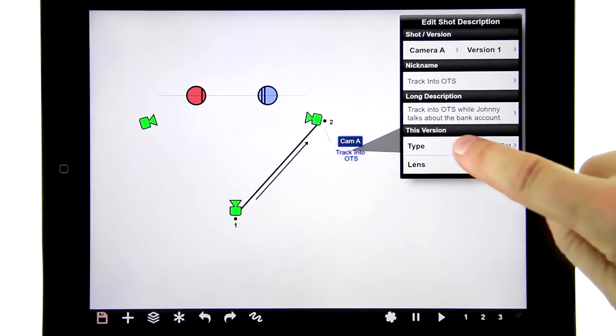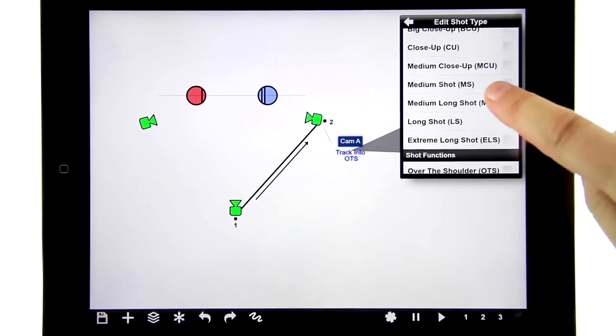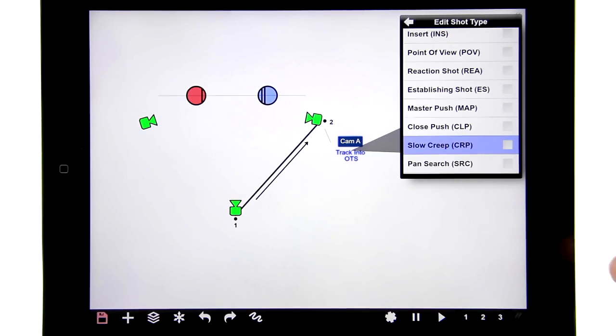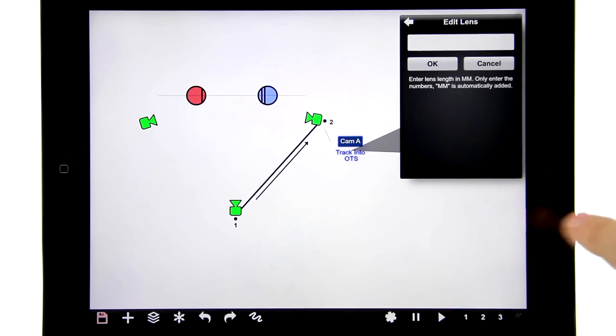I can also select a shot type and choose from a list of either shot sizes or shot functions that are down here. I'm going to pick a slow creep, and I can enter a lens, so let's make that an 80 millimeter.